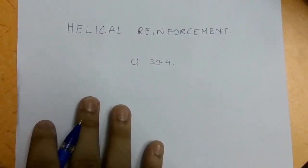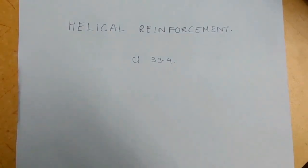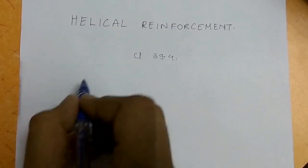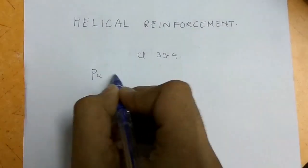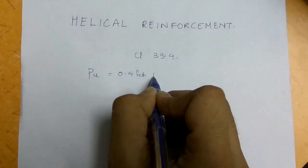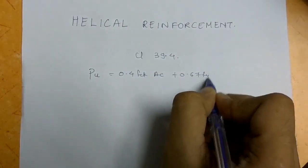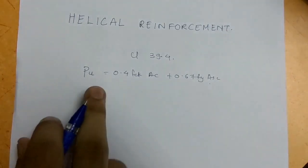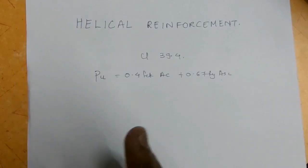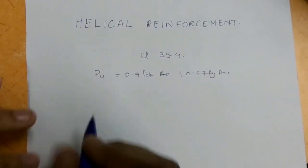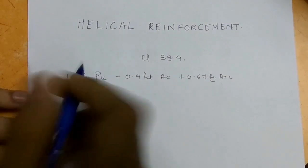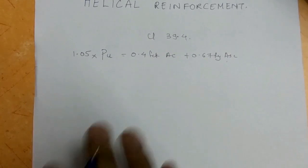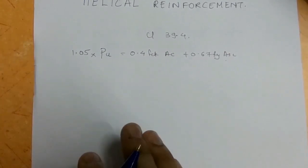IS code clause 39.4 states that if you are designing a column with helical ties, you have to increase its strength by five percent. For a rectangular column, the strength is PU = 0.4 × fck × Ac + 0.67 × fy × Asc, where Asc is the area of steel, Ac is the area of concrete, and PU is the design strength. When designing with helical reinforcement, you multiply this by 1.05 because it increases the column strength by five percent.